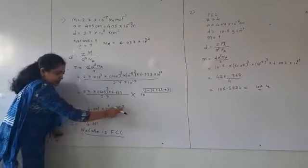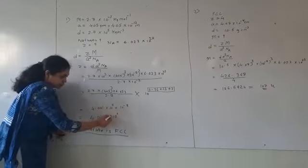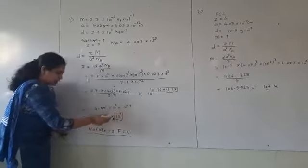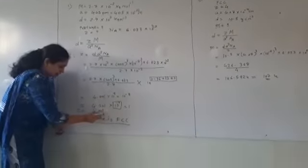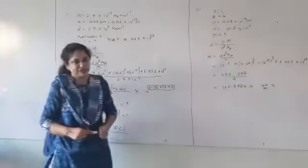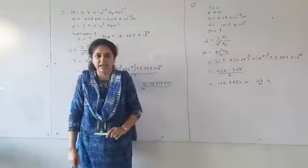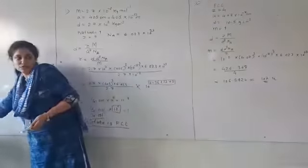Thus, 8 and minus 8 becomes 0. So anything to the power 0 is 1. So this term becomes 1. So the answer is 4.001, which we can approximate to 4. So the nature is FCC because the value of Z has come to be 4. Next numerical.